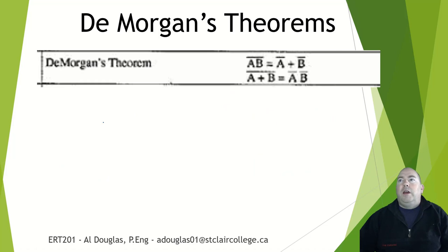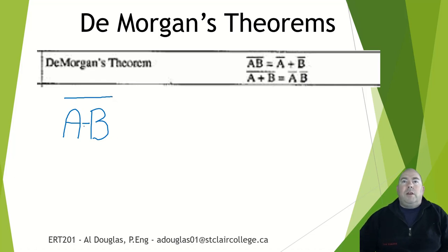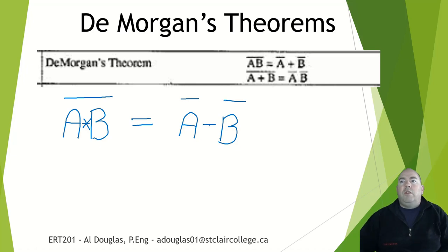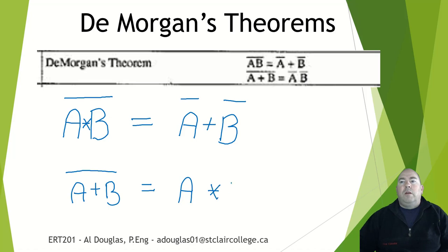De Morgan's Theorems: basically, if you have something with a bar over top of it encompassing an AND operator, you can break that bar and change the operator. That is the same as breaking the bar into two individual bars and changing the operator from AND to OR. The same rule applies the other way: break the bar and change the operator. We will use this one a lot.